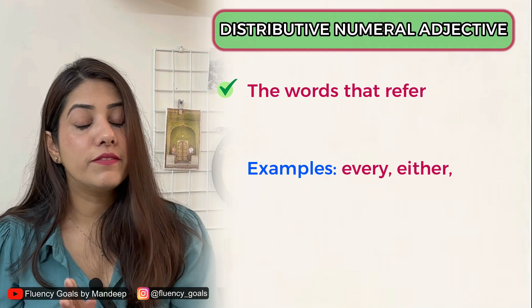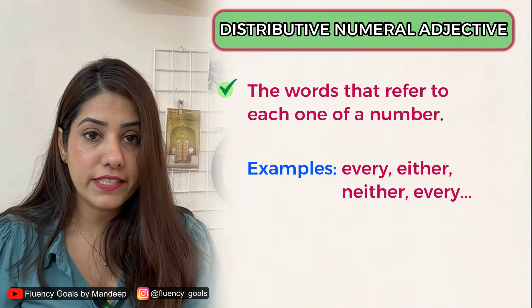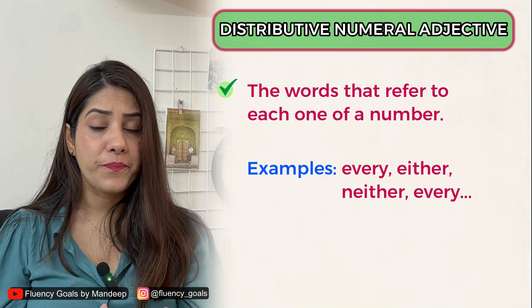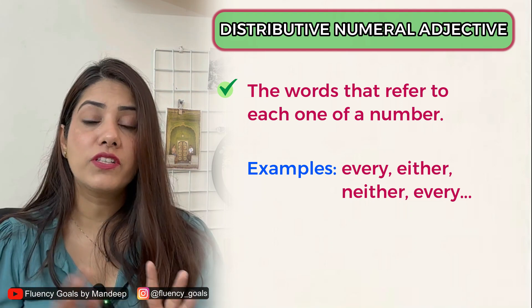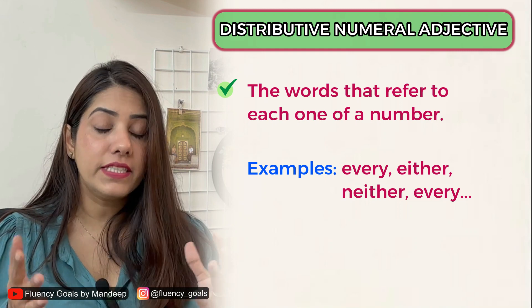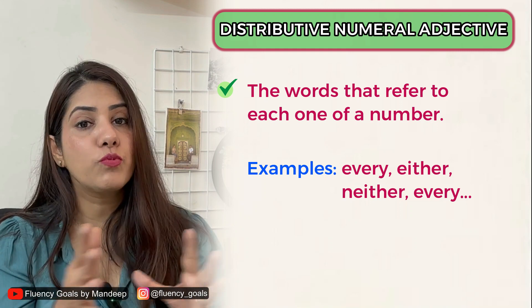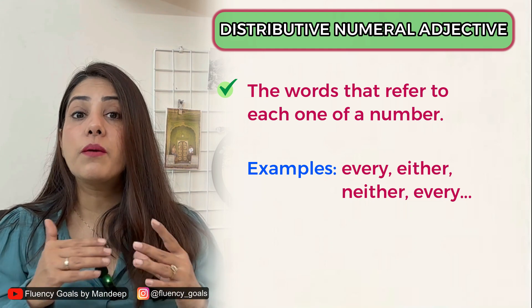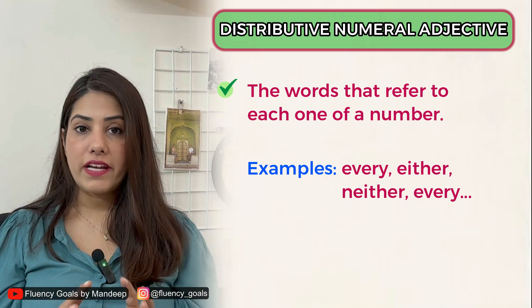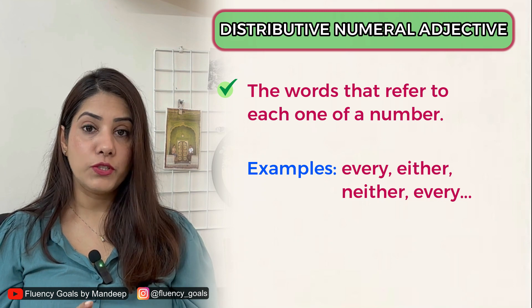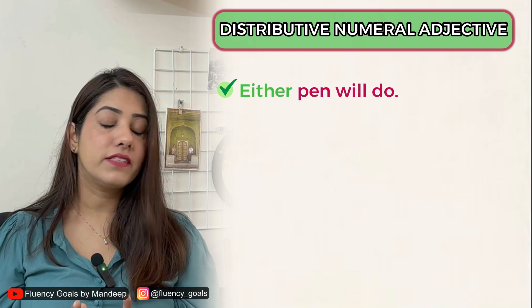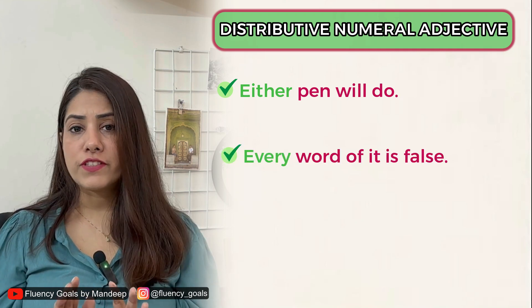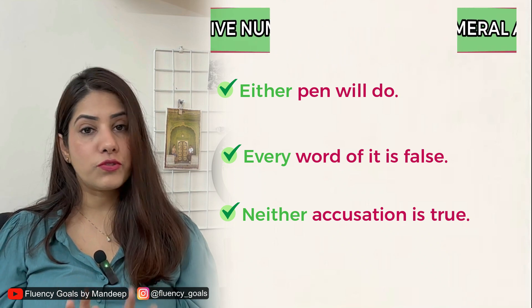Distributive numeral adjectives include words like each, either, neither, every — words referring to each one of a number. For example: 'Every boy in the class was punished' — 'every' is a distributive numeral adjective. 'Either pen will do', 'Every word of it is false', and 'Neither accusation is true' are further examples.